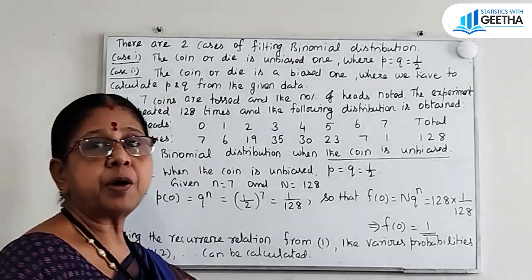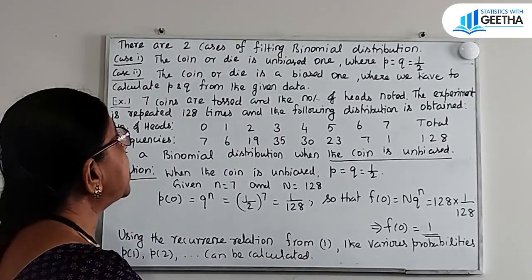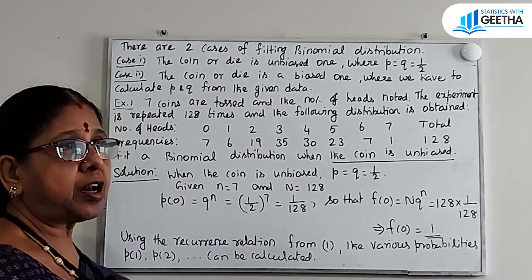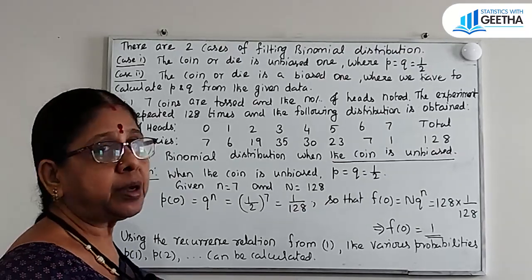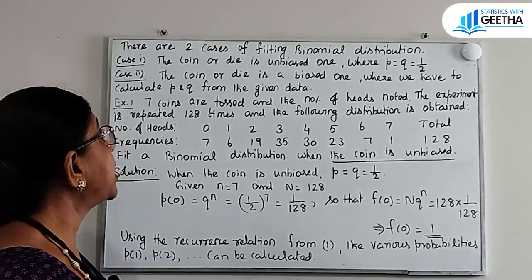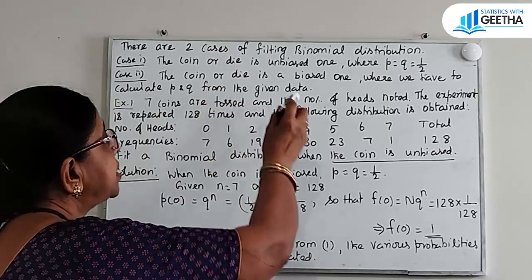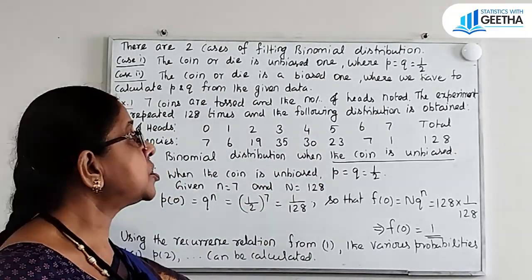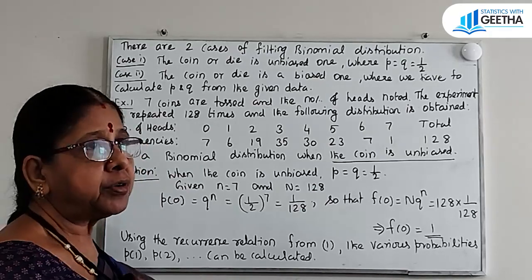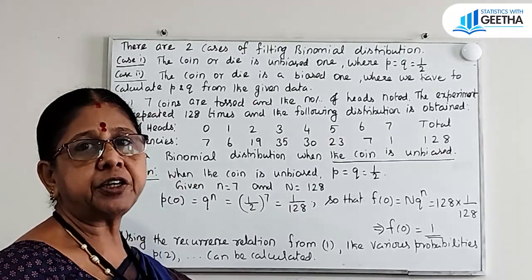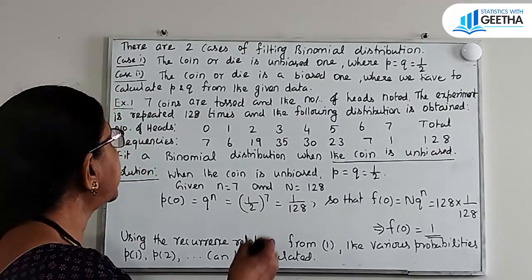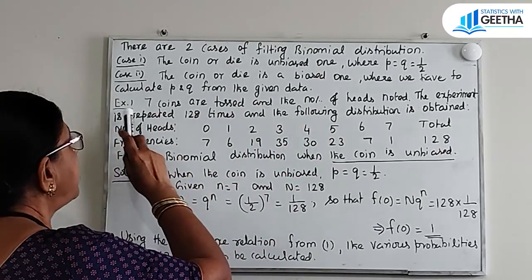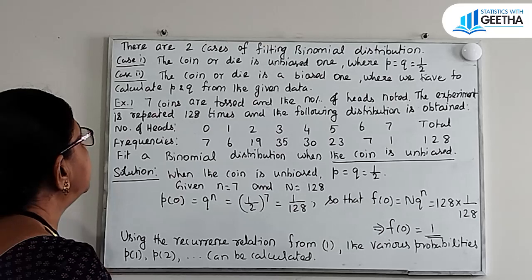In fitting of binomial distribution, there are two cases. One is that the coin or die is unbiased, and the other is when p and q are calculated separately from the given data.